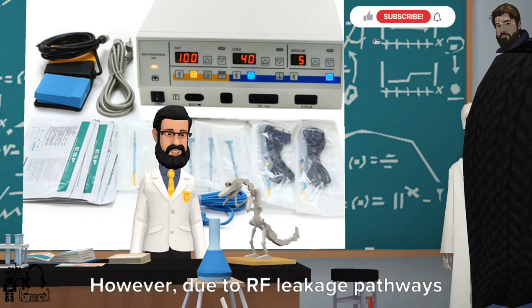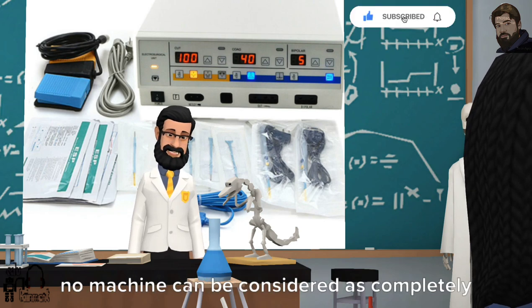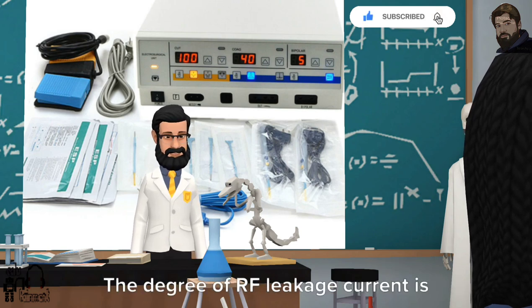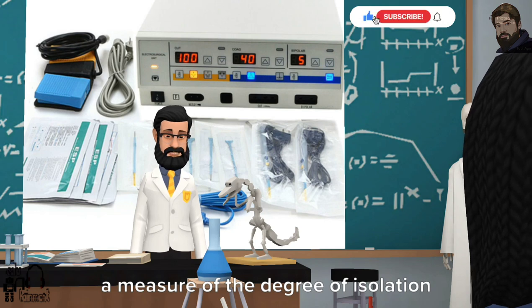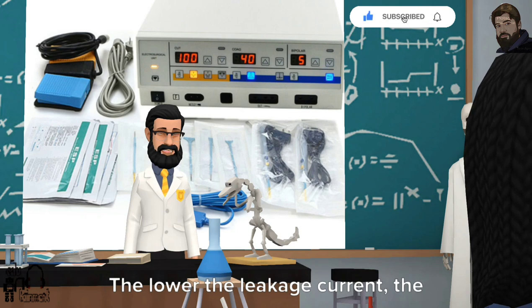The degree of RF leakage current is a measure of the degree of isolation of a particular machine. The lower the leakage current, the better the isolation.